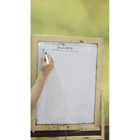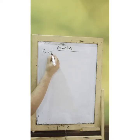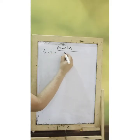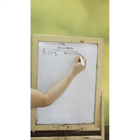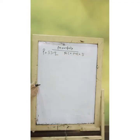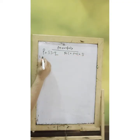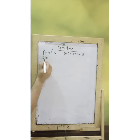Suppose we have P equal to 53 minus Q, and AC equal to MC equal to 5. The first thing which we want to find out is equilibrium quantity.